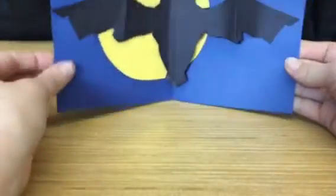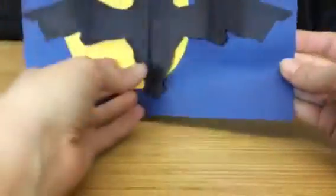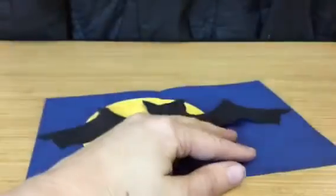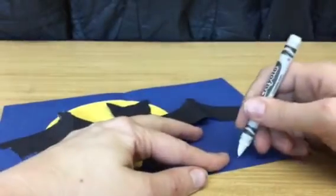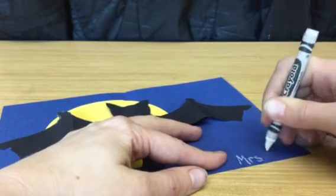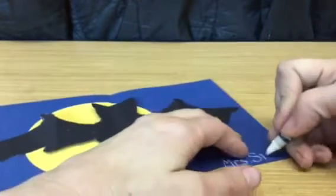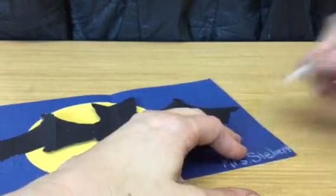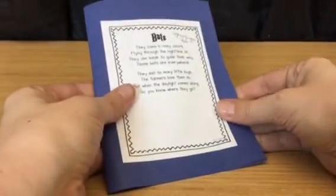So now that you have your bat, it looks so awesome. You've got to write your name on the bottom. I would use your crayon. It will make it show up. All right. Mrs. Siebert. There we go. Beautiful. Just beautiful. Now go read your bat book to somebody.